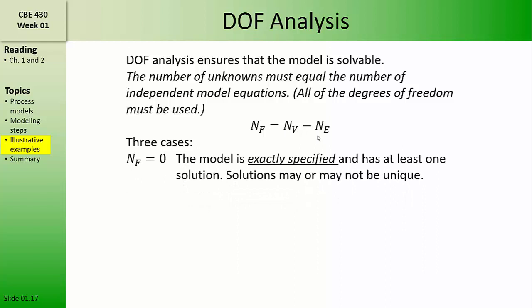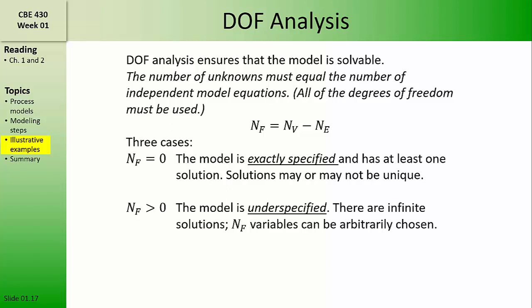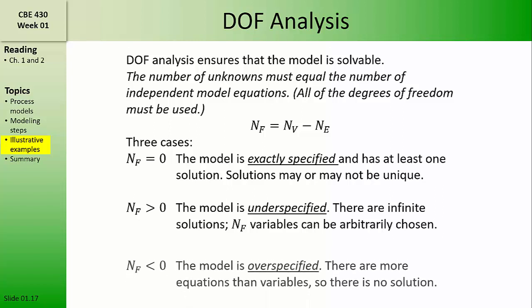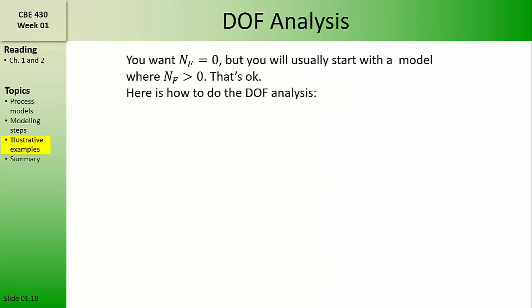Three cases can arise. The number of degrees of freedom could be zero, in which case we say that the model is exactly specified — likely the model has at least one solution, though solutions may or may not be unique depending on whether the model equations are linear or nonlinear. If the degrees of freedom are greater than zero, then the model is underspecified — there are an infinite number of solutions, and nf of the variables can be arbitrarily chosen. If the number of degrees of freedom is less than zero, then the model is over-specified, meaning there are more equations than unknowns and the model likely has no solution.